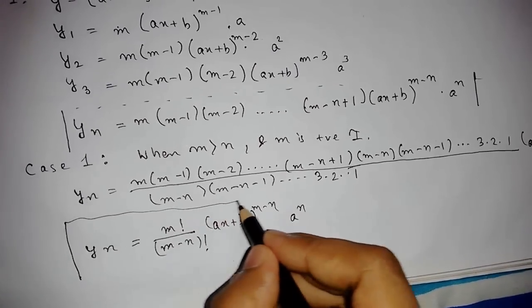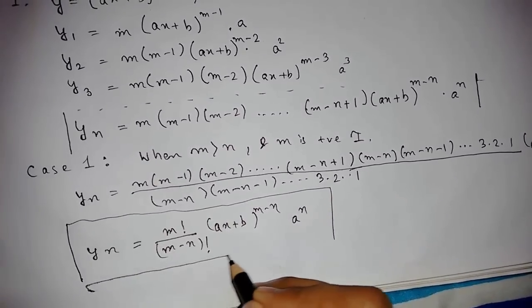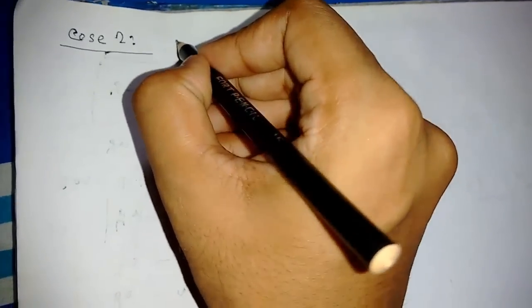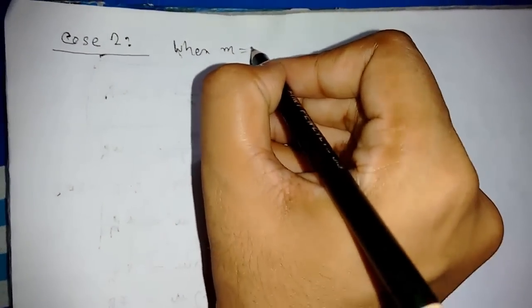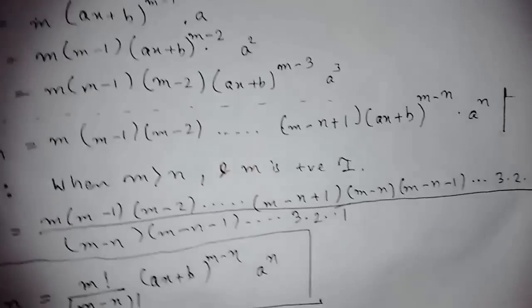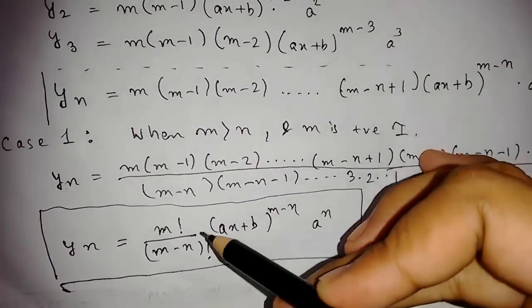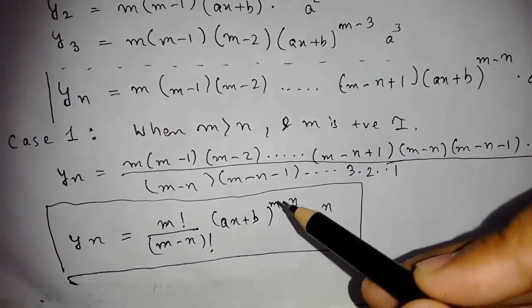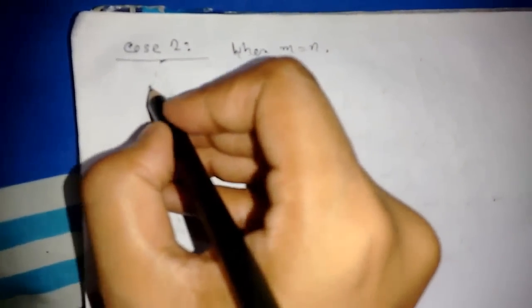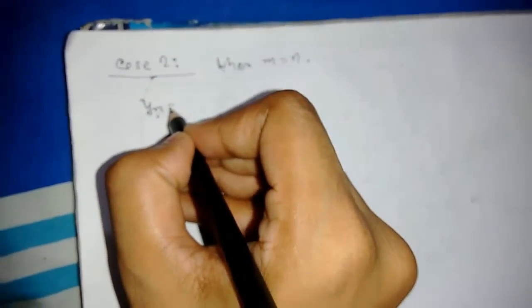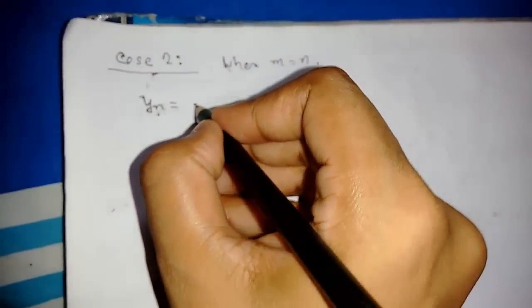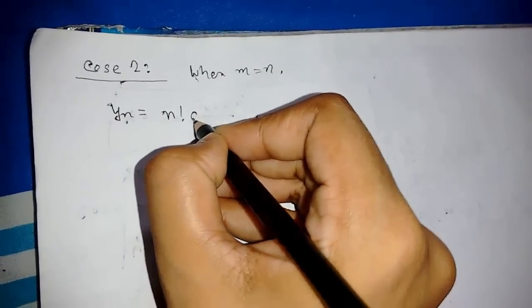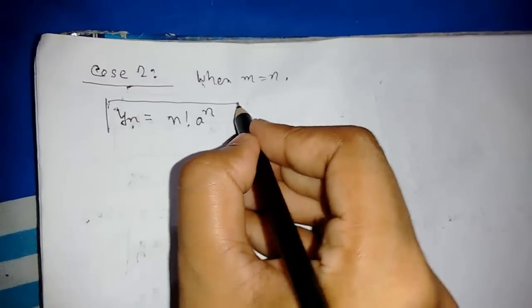This is a very important formula that you always have to keep in mind. Now let us move on to Case 2, which is when m equals n. This is simple. When our m equals n, the (m−n) term becomes 0, so (m−n)! = 0! = 1. So basically this turns out to be yₙ = n! times aⁿ. So this was pretty easy.